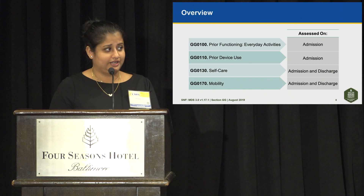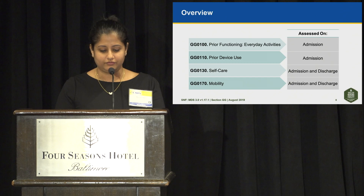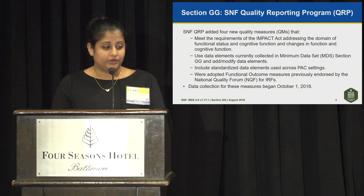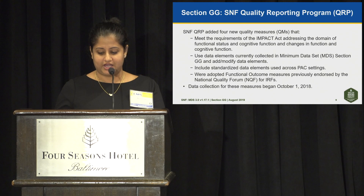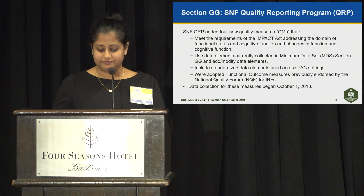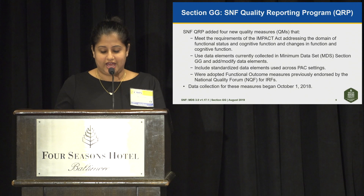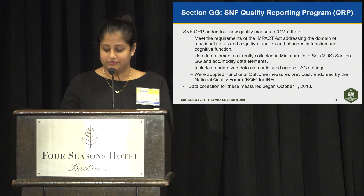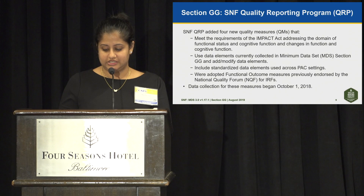Two years ago in rulemaking, the SNF QRP added four new quality measures. The objective was to meet the requirements of the IMPACT Act, addressing the domain of functional status and cognitive function and changes in function and cognitive function. These use data elements currently collected in the MDS Section GG, include standardized data elements used across the four PAC settings, and they adopted functional outcome measures previously endorsed by the NQF for IRFs. Data collection began for these measures in October of last year.